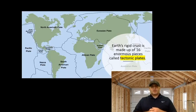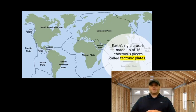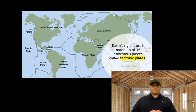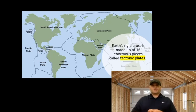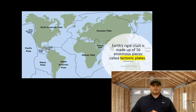The Earth's rigid crust is made up of 16 enormous pieces called tectonic plates — those are the plates our continents sit on. If you look at the different continents in this picture, you can see the plates that they actually sit on. North America sits on the North American plate, South America on the South American plate. The borders of these plates are pretty similar in shape to the continents that sit on them, because way beneath the ocean where that crust meets the mantle, that determines how those plates shift and move.